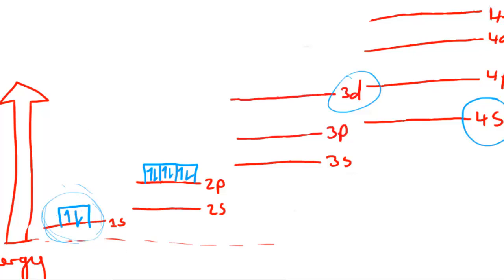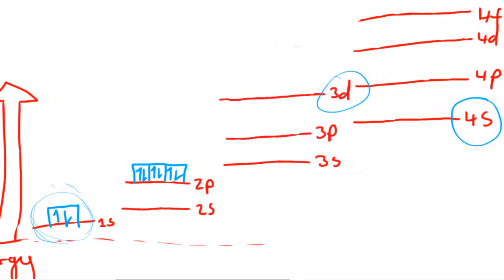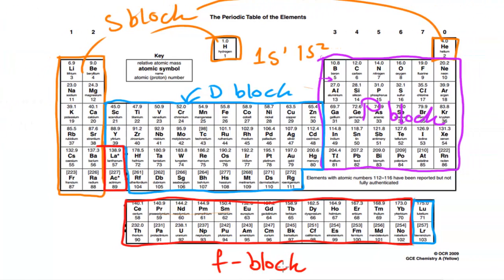Now let's look at the different blocks of the periodic table. The periodic table is split up into blocks: an S block, a D block, a P block, and an F block. The S block elements — such as helium, hydrogen, lithium — have their last electron filling an S subshell or S orbital.